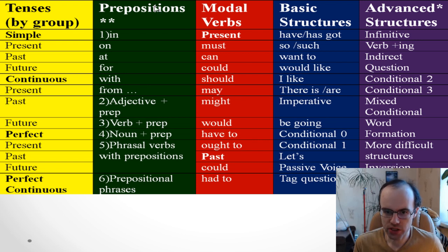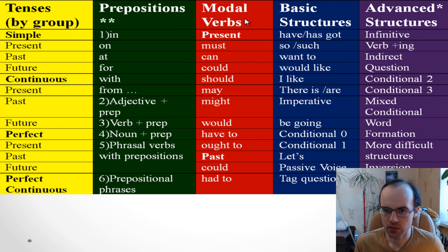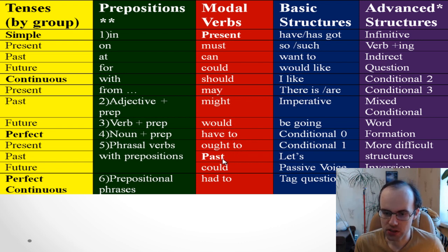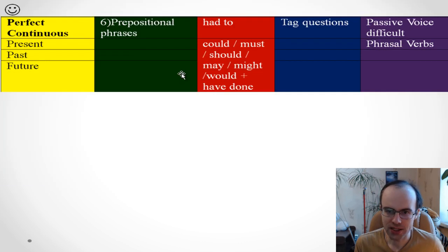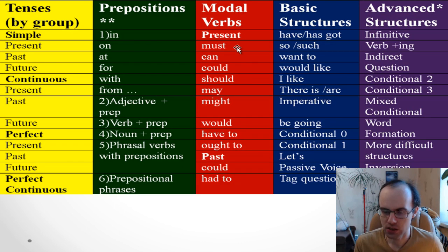If you look at prepositions, you can't ignore these lists — adjectives, verbs, nouns, and phrasal verbs with prepositions — and also pay attention to prepositional phrases. Next: modal verbs. We often use them. You need to learn: must, can, could, should, may, might, would, have to, and ought to.